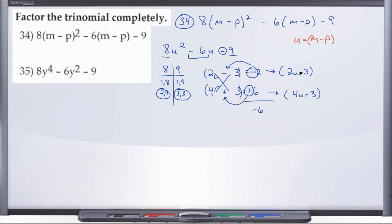And now you might be tempted to say, oh, I'm done, but be careful. Because we said that u represents a quantity, u equals m minus p. So we have to go back through and replace our u with the quantity that u represents.